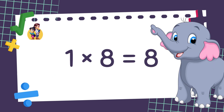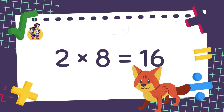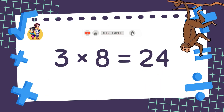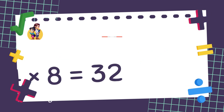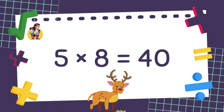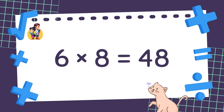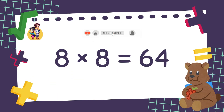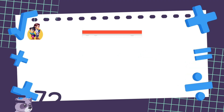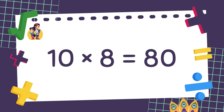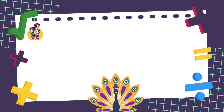1 times 8 is equal to 8. 2 times 8 is equal to 16. 3 times 8 is equal to 24. 4 times 8 is equal to 32. 5 times 8 is equal to 40. 6 times 8 is equal to 48. 7 times 8 is equal to 56. 8 times 8 is equal to 64. 9 times 8 is equal to 72. 10 times 8 is equal to 80. Well done!